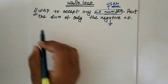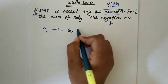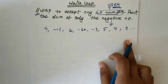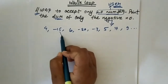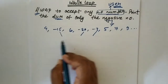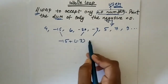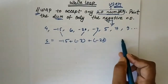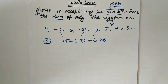That means if the user gives values like 4, minus 15, 6, minus 20, minus 3, 5, 7, 9 and so on — we have to find the sum of only the negative numbers. We check whether each number is negative or positive, and if negative, we add it to a sum variable S. S stores the sum of all negative numbers.